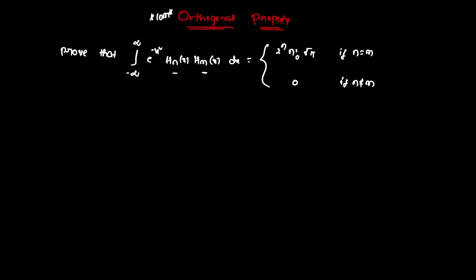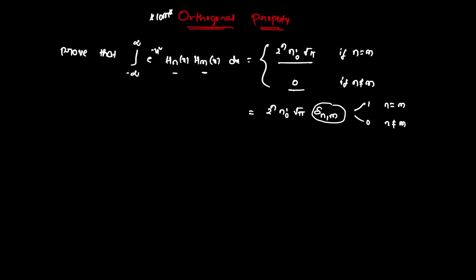The value is 2^n into n factorial into root pi when n is equal to m, and equal to 0 when n is not equal to m. This can be written as 2^n into n factorial into root pi into delta_{n,m}, where delta is the Kronecker delta equal to 1 if n equals m, and 0 otherwise. This is the orthogonal property.